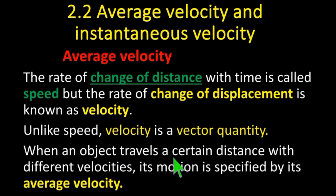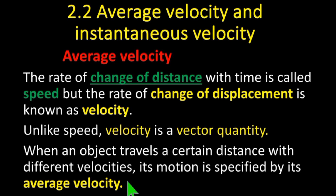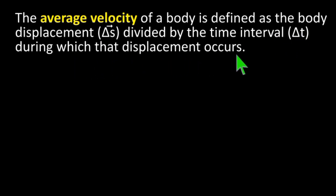When an object travels a certain distance with different velocities, its motion is specified by its average velocity. The average velocity of a body is defined as the change of displacement divided by the time interval during which that displacement occurs.